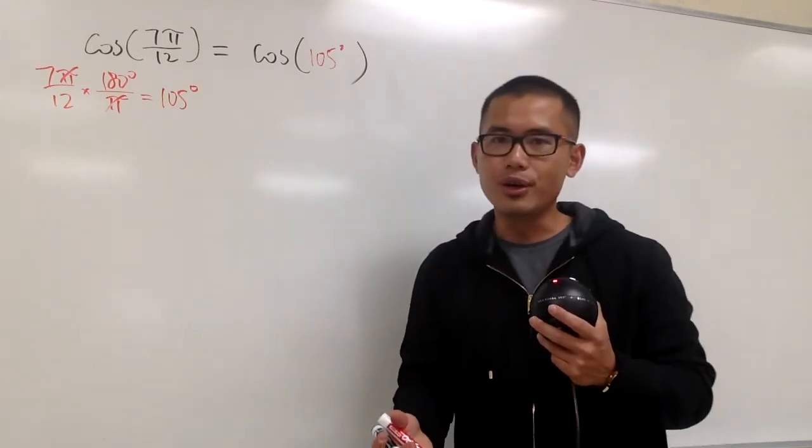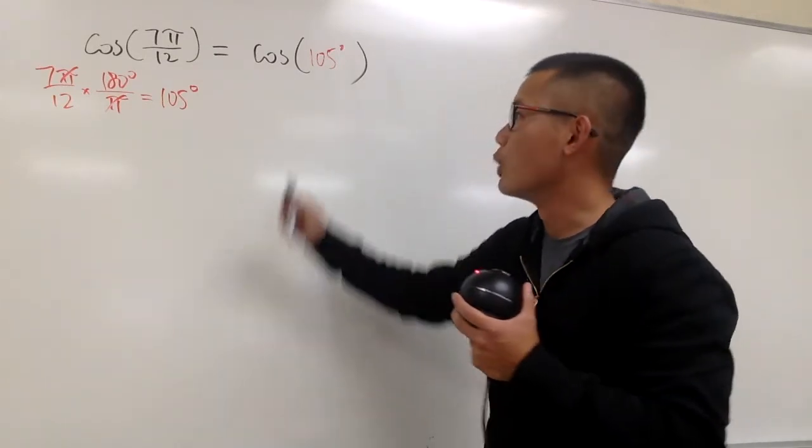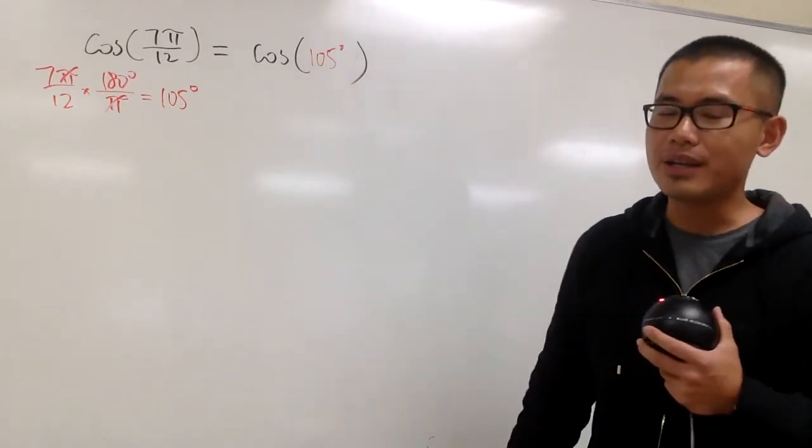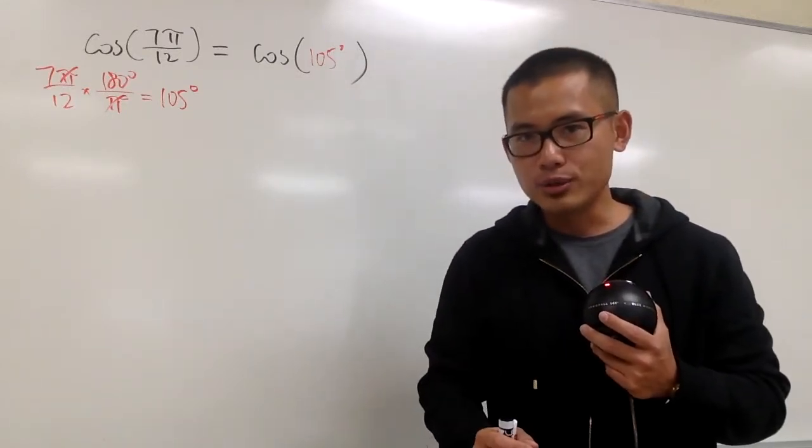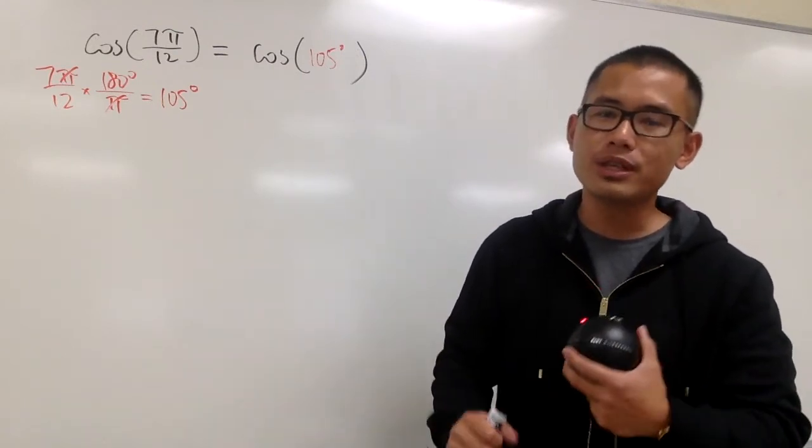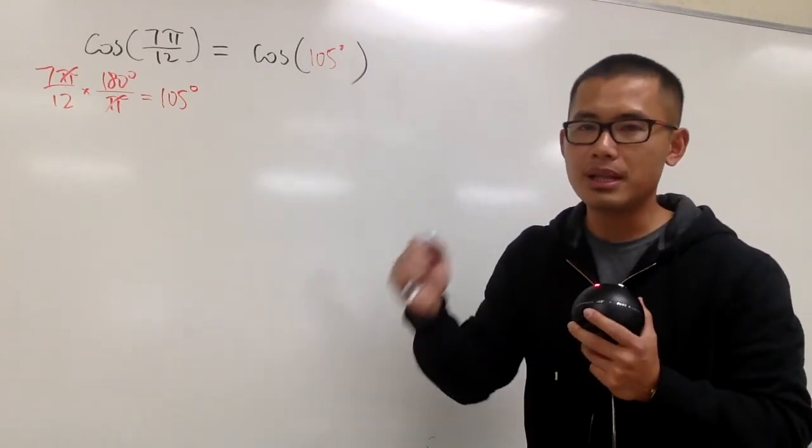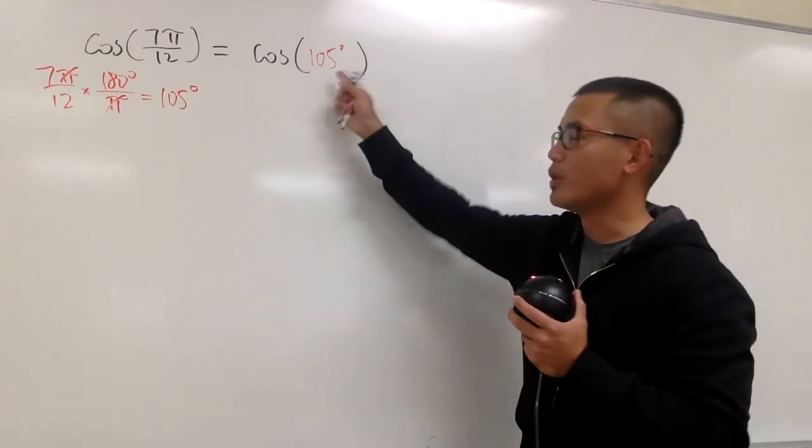And now you know the deal. What plus what will give us 105? Well, maybe one minus what will give us 105, right? And two of those angles, they have to be special angles that we know how to work with. Well, we do notice that 45 plus 60 is 105, right?